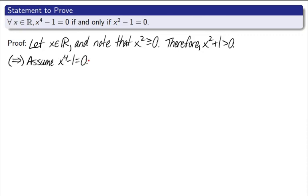Assume x to the fourth minus 1 is equal to 0. And again, my goal is to show that x squared minus 1 is equal to 0. Now let's go ahead and factor it. Then x squared plus 1 times x squared minus 1 equals 0. Again, this is one of those places where your reader should be decent at algebra, that they can go ahead and follow this step without you having to explain that you just factored.